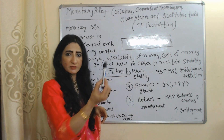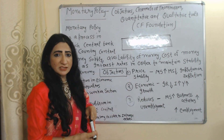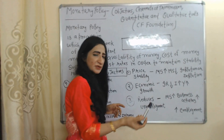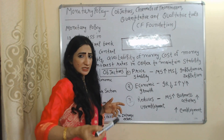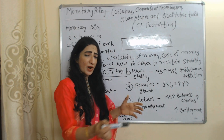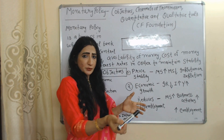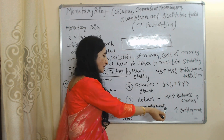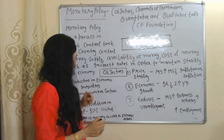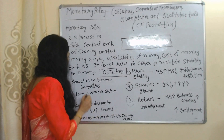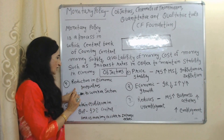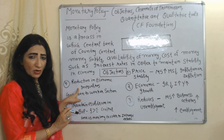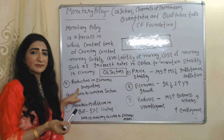As money supply increases, business activities also increase. When business activity increases, they provide jobs to more people — as a result, unemployment also reduces. Reduction in economic inequality — economic inequality is the gap between rich and poor.